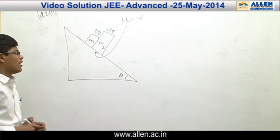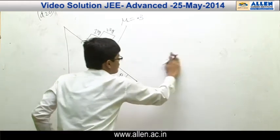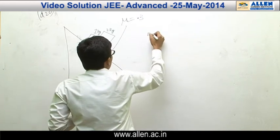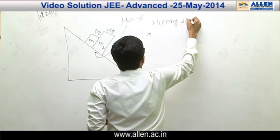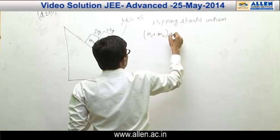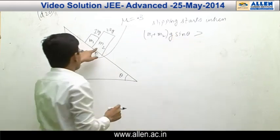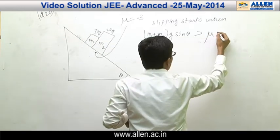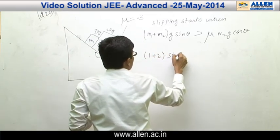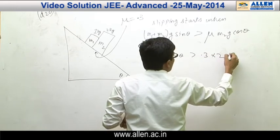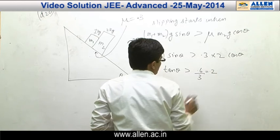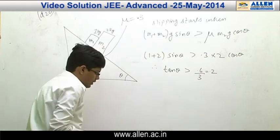Slipping will start when the gravitational component due to both masses overcomes friction. That is, slipping starts when (M1 + M2)g sin θ > μN = μ M2 g cos θ. Putting the values: (1 + 2) sin θ > 0.3 × 2 cos θ. Therefore, tan θ > 0.6/3 = 0.2. So tan θ = 0.2 corresponds to θ ≈ 11.5°.